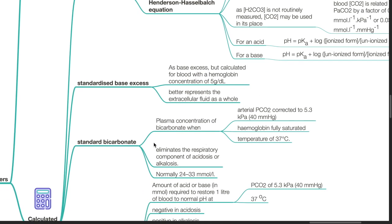Standard bicarbonate is the plasma concentration of bicarbonate when arterial pCO2 is corrected to 40 mmHg, haemoglobin is fully saturated, and temperature is 37 degrees Celsius. It eliminates the respiratory component of acidosis or alkalosis, and is normally 24 to 33 mmol per litre.